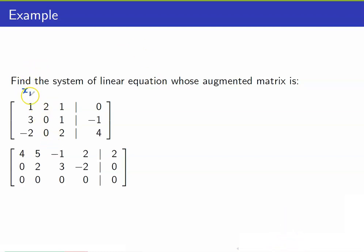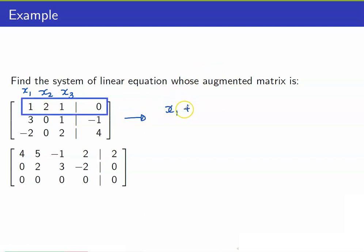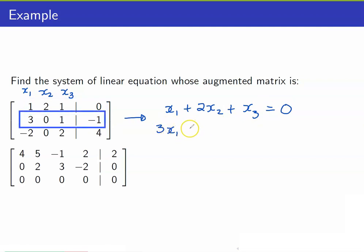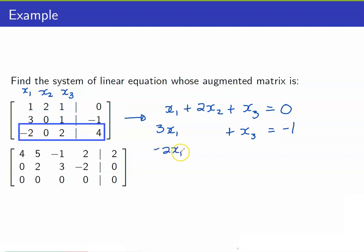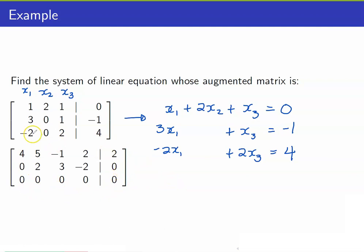In our previous example we had a system of equations and wrote its augmented matrix. Now, given an augmented matrix, we want to find the corresponding system of linear equations. The columns correspond to x1, x2, and x3. So the system is: 1·x1 plus 2·x2 plus x3 equals 0; 3·x1 plus 0·x2 plus x3 equals negative 1; and negative 2·x1 plus 0·x2 plus 2·x3 equals 4. I will leave it up to you to find the system associated with another augmented matrix; just to start it off, note that it has 4 variables.